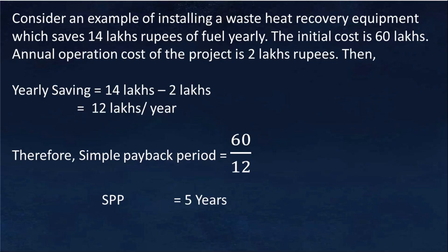Consider an example of installing a waste heat recovery equipment which saves 14 lakhs rupees yearly. The initial cost is 60 lakhs and operation cost of equipment is 2 lakhs. Then yearly saving will be 14 lakhs minus 2 lakhs equal to 12 lakhs. Hence SPP is equal to 60 lakhs divided by 12 lakhs per year, which is equal to 5 years.